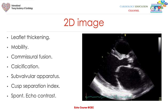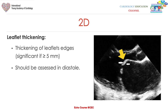On 2D images in mitral stenosis, we see leaflet thickening with restricted mobility, commissural fusion, calcification, subvalvular apparatus changes, cusp separation index, and spontaneous echo contrast within the left atrium. Leaflets tend to be thickened at the edges, and significant stenosis is defined as over 5 mm at the tip of the valve, assessed in diastole while the mitral valve is fully open.